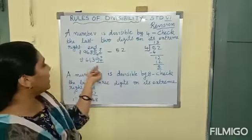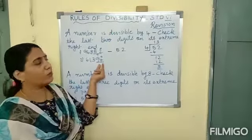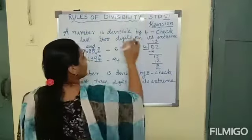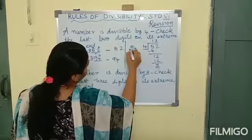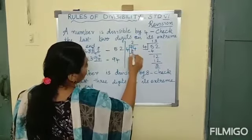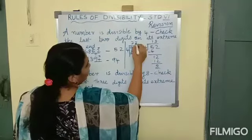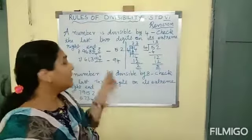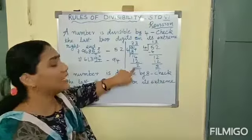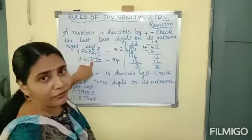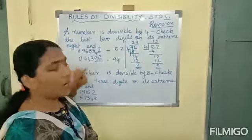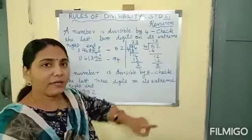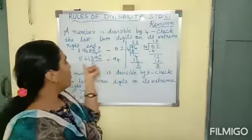Now check 61,394. The number formed by the last 2 digits is 94. Check whether 94 is divisible by 4. 2 fours are 8, 9 minus 8 is 1, giving 14; 3 fours are 12, remainder is 2. You got a remainder of 2, so 94 is not completely divisible by 4. Therefore, 61,394 is not divisible by 4. To check divisibility by 4, check the last 2 digits; if that number is divisible by 4, the whole number is divisible by 4.